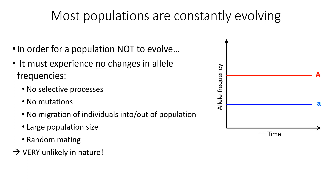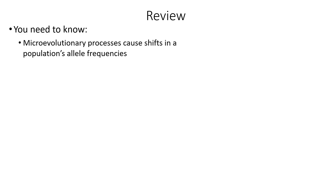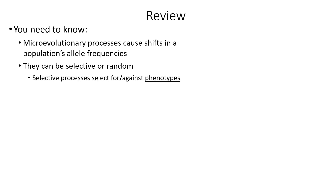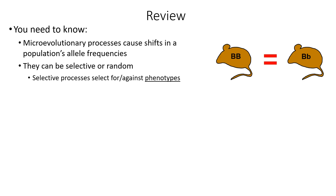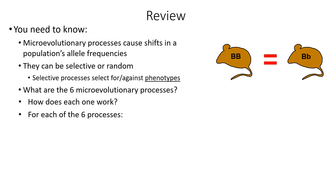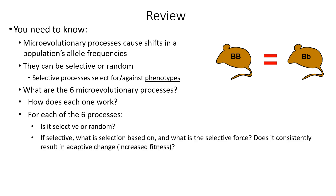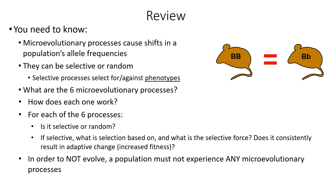To wrap up, let's summarize the main points. Microevolutionary processes cause shifts in a population's allele frequencies, and these processes can be selective or random. For selective processes, they select for or against phenotypes — for example, in the mouse population, increased survival is due to the brown phenotype that helps mice camouflage, not their specific genotype. You need to know all six microevolutionary processes and how each one works, whether each is selective or random, what selection is based on and what the selective force is, and whether each process consistently results in adaptive change or increased fitness. Finally, in order to not evolve, a population must not experience any of these processes — which is very unlikely in nature, so most populations are constantly evolving.